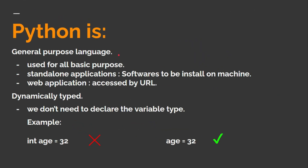Python is a general purpose language and it is used for all basic purposes. It is used for making standalone applications — applications which we need to install on our machine — and it is also used for making web applications, which are applications that can be accessed by typing a URL in the search engine.